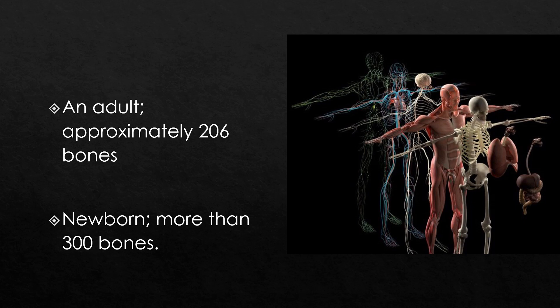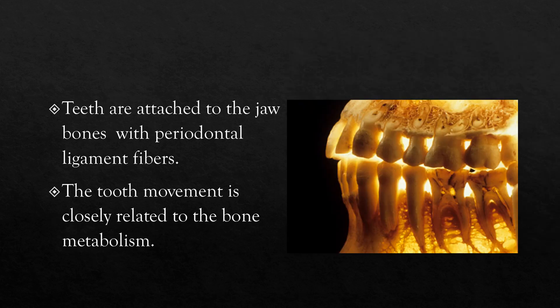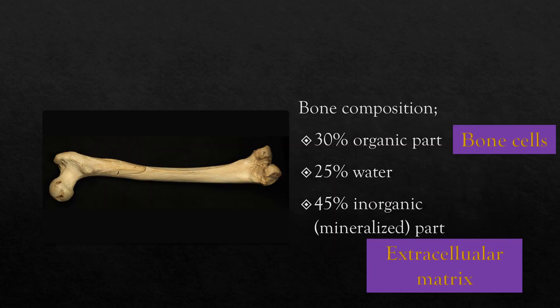Newborns possess more than 300 pieces of bone, providing them enough flexibility to pass through the birth canal. Teeth are attached to the jaw bones with periodontal ligament fibers. Tooth movement is closely related to bone metabolism. As mentioned previously, bone composition changes through life. Bones are composed of an organic part, water, and an inorganic part.